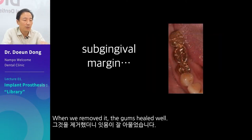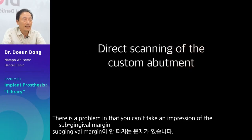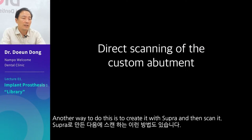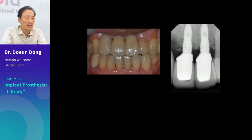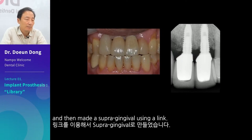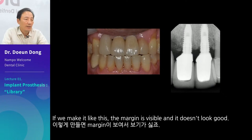There is a problem in that you can't take an impression of the sub-gingival margin. So, we scanned the custom abutment. Another way to do this is to create it with a supra-gingival margin and then scan it. As you can see, we made an abutment with zirconia and then made a supra-gingival margin using a link. If we make it like this, the margin is visible and it doesn't look good.